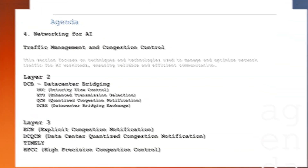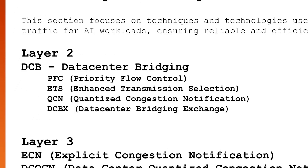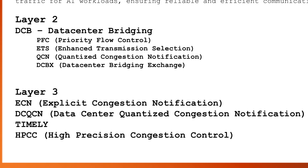Also in this module I will go through management and congestion control mechanisms — critical for smooth and reliable network communication in AI infrastructure, where huge amounts of data transfer happen between nodes. I will cover traffic management strategies at Layer 2 and Layer 3. At Layer 2 I will discuss data center bridging technologies such as PFC, ETS, QCN, and DCBX. At Layer 3 I will explain protocols like ECN, DCQCN, TIMELY, and HPCC, and how they enable end-to-end congestion control in AI network infrastructure.